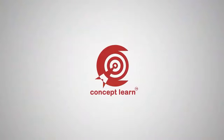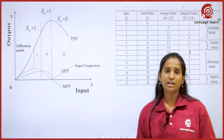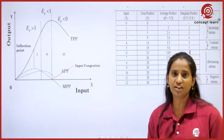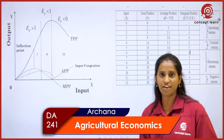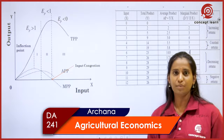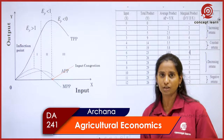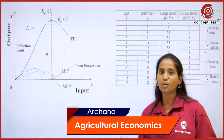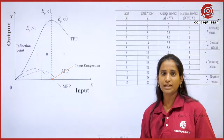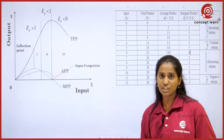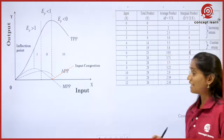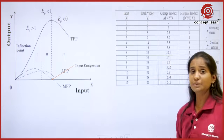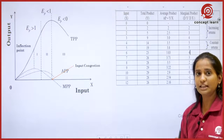Welcome to Concept Learn. Here we understand what is Total Physical Product, Marginal Physical Product, and Average Physical Product. We have taken an example, plotted it on a graph, and understood how TP, AP, and MP change according to the change in the input factor. Now we will understand the relationship between TP, MP, and AP.